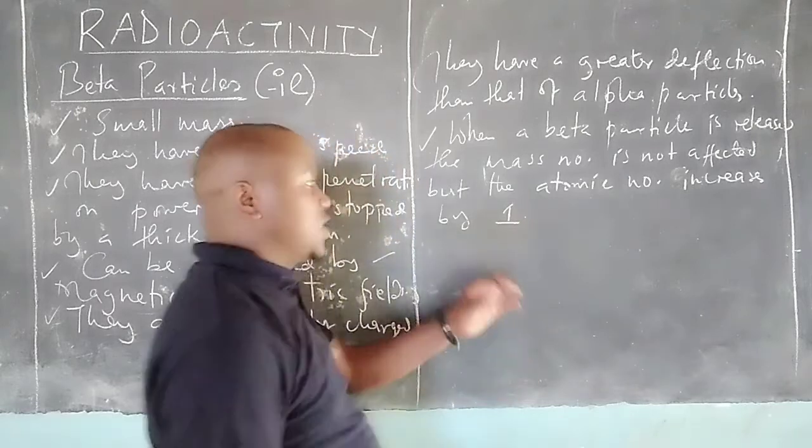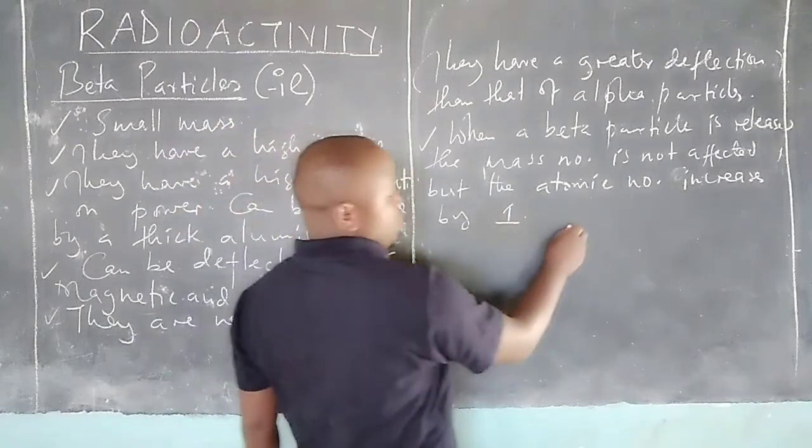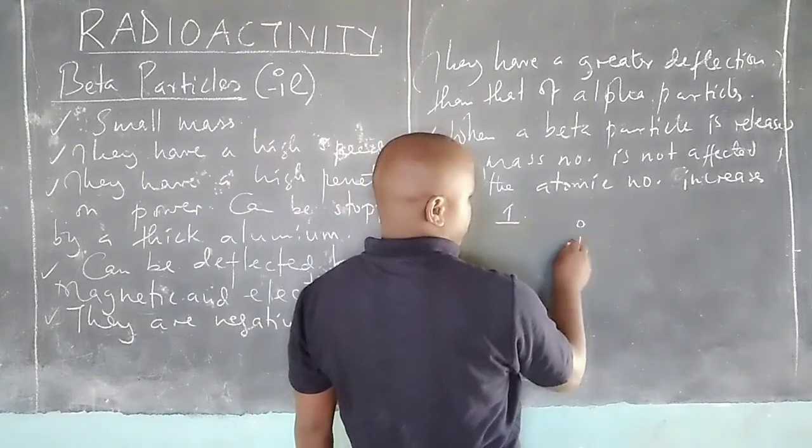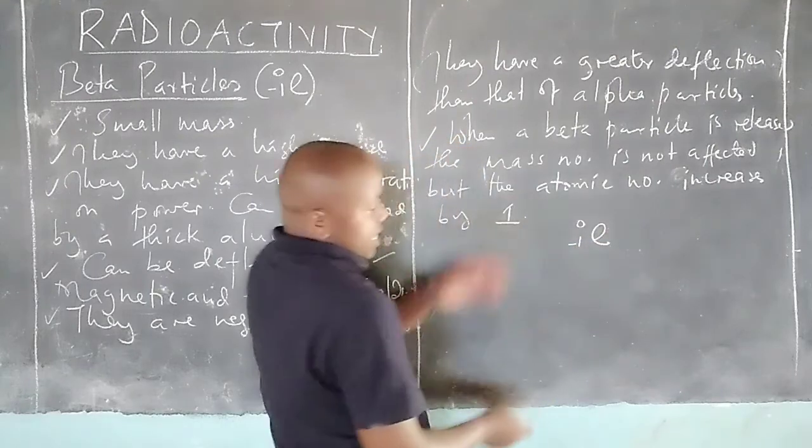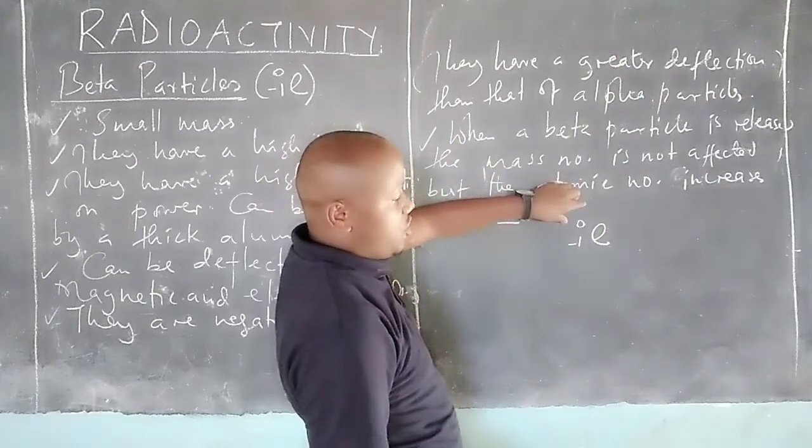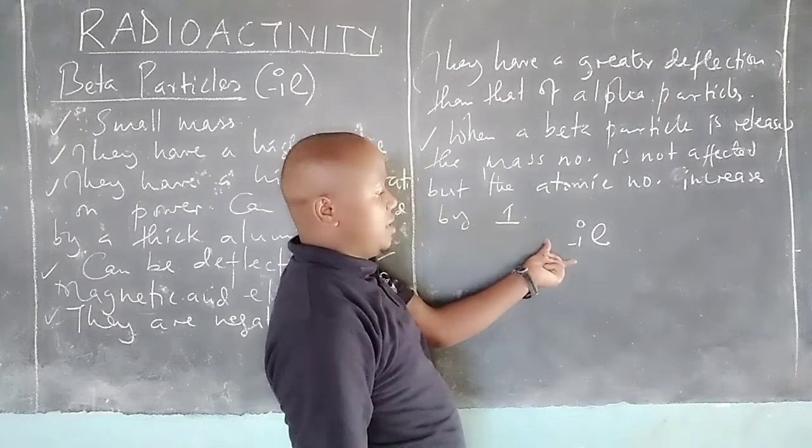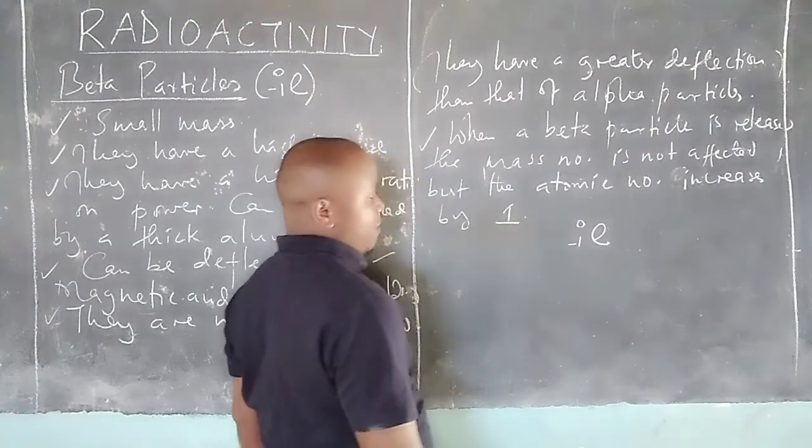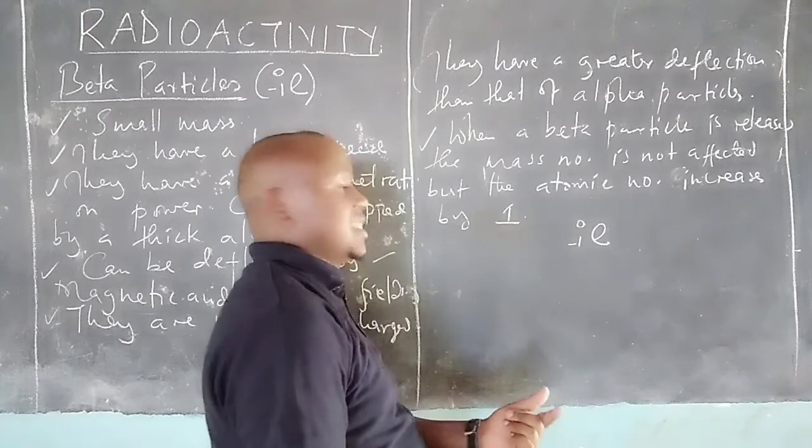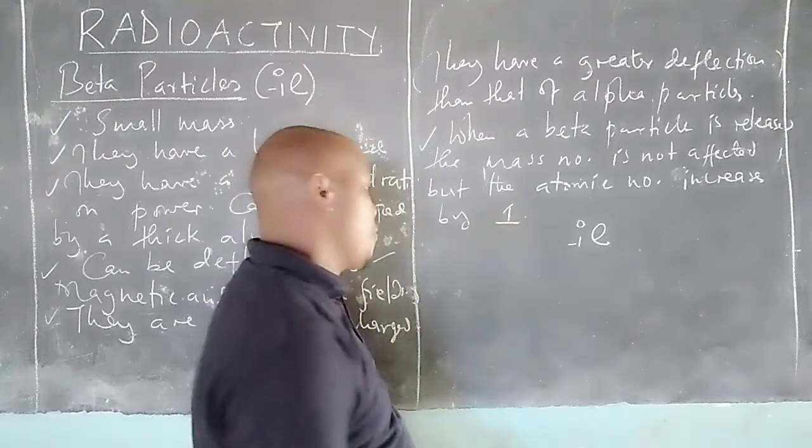Remember, we are losing a negative. An electron is represented like this. Therefore, the mass number will not be affected because this is a zero. But because this one is negative one, then losing a negative one is just like adding one.